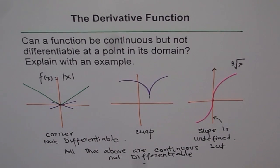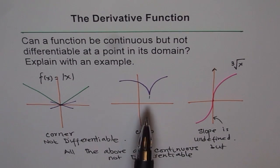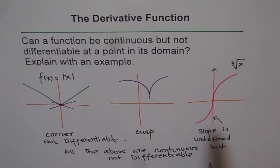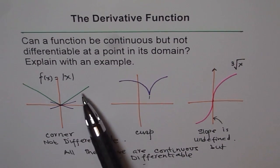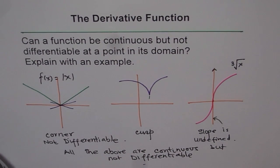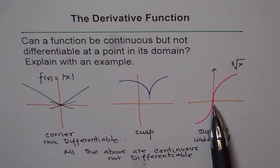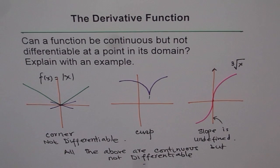So a function can be continuous and not differentiable. How to recognize it from a graph? Very simple — either there is a corner, or there is a cusp, or there is a vertical tangent. These are the cases where we may have a continuous function that is not differentiable at that point. These functions are differentiable at other points — you can always draw a slope there — but not at the corner point, the cusp point, or the point where the slope is undefined and concavity changes. These are the points where the function is continuous but we cannot find the slope, and so they are not differentiable.